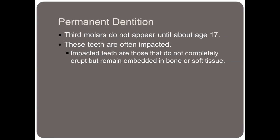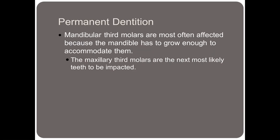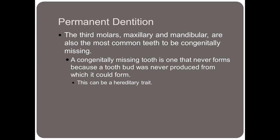Third molars or wisdom teeth don't appear until about the age of 17. These teeth are oftentimes impacted, meaning they do not completely erupt or cannot erupt and remain embedded in bone or soft tissue. Mandibular third molars are most often affected because the mandible has to grow enough to accommodate them, and the maxillary third molars are the next most likely to be impacted. Third molars — maxillary and mandibular — are also the most common teeth to be congenitally missing. A congenitally missing tooth is one that never forms because the tooth bud was never produced, and this can be a hereditary trait.